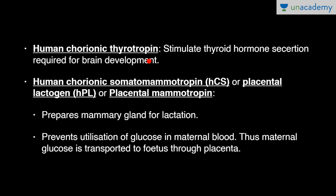Human chorionic thyrotropin stimulates thyroid hormone secretion, which is required for brain development. Human chorionic somatomammotropin (HCS), also called placental lactogen (HPL) or placental mammotropin, prepares the mammary gland for lactation. It also prevents utilization of glucose in maternal blood, so that maternal glucose is transported to the fetus through the placenta, ensuring the fetus receives adequate nutrition.